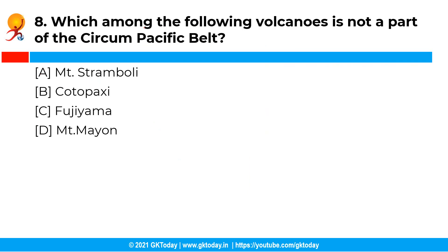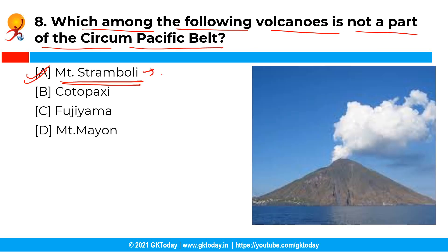The next question is: which among the following volcanoes is not a part of the circum-Pacific belt? The correct answer is Mount Istambuli, option A. Mount Istambuli is a part of the Mediterranean belt. The circum-Pacific belt extends to the margins of the Pacific Ocean and almost 80% of the volcanoes are situated here.